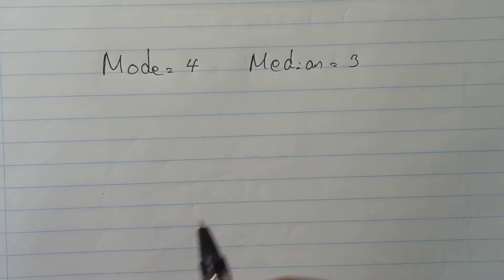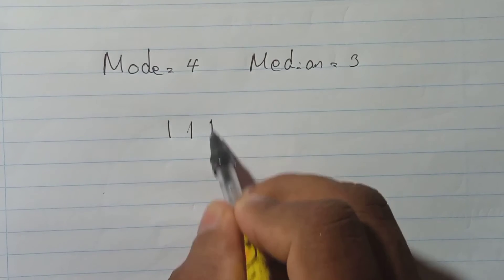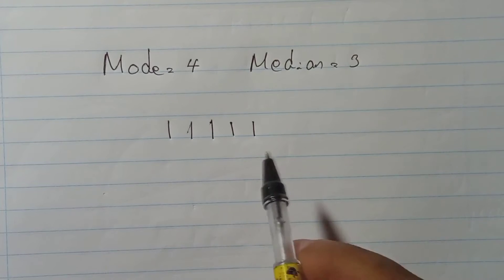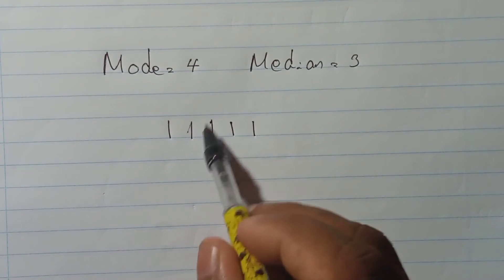Okay, now let's say there are five numbers like this. These are the five numbers. I will just put dash five dash. Now they tell here median is 3, that means the middle number should be 3.